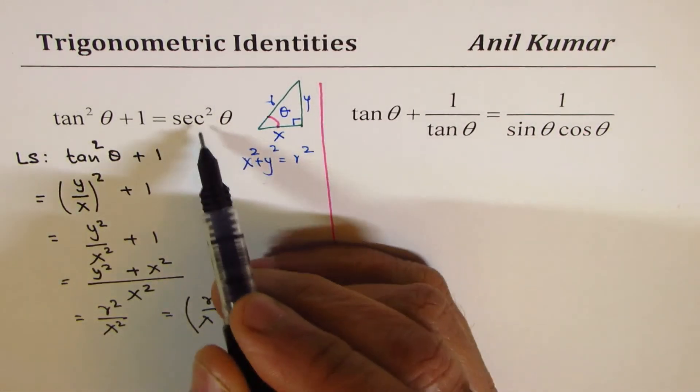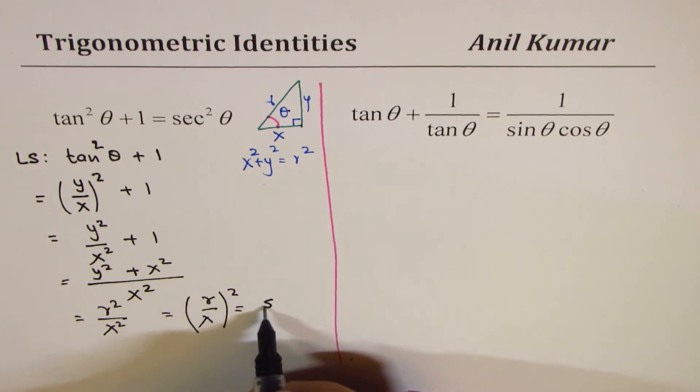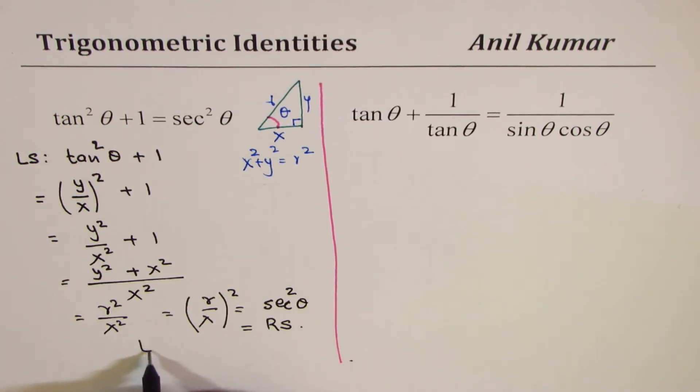Now, what is r over x? It is secant theta. So, we get secant squared theta, which is the right side. So, in a way, we have shown how left side is equals to right side. And those are the steps to be followed to prove this identity.